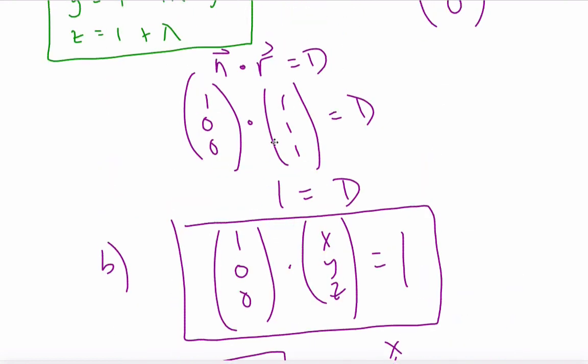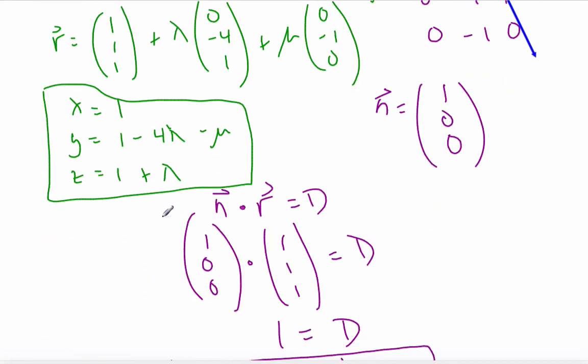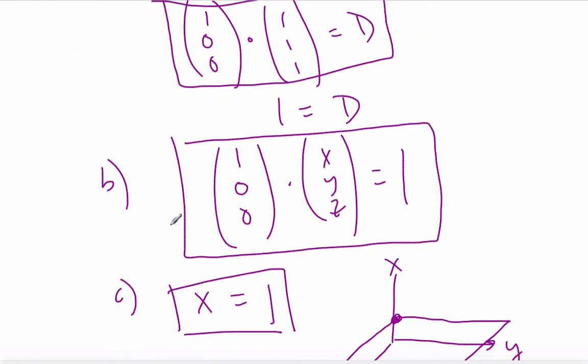So, we have all our forms now. We have our vector form of a plane, our parametric form of our plane, our scalar product form of the plane, and finally our Cartesian form of the plane.